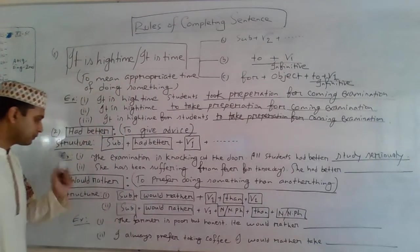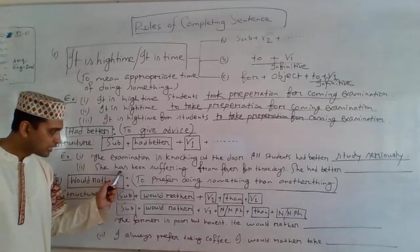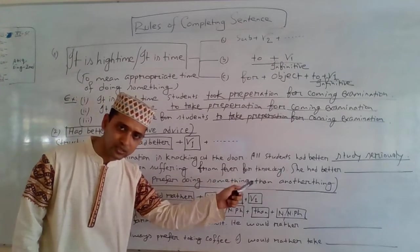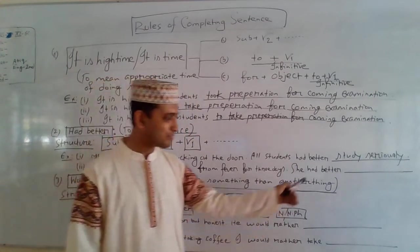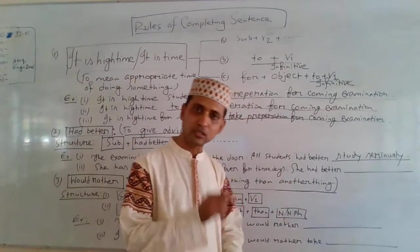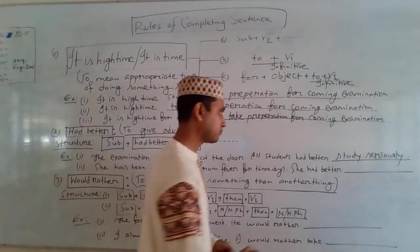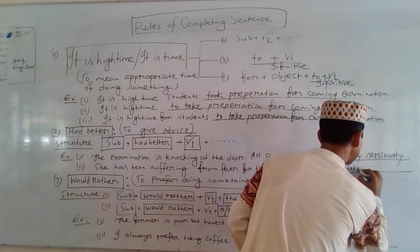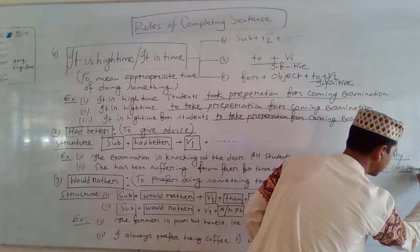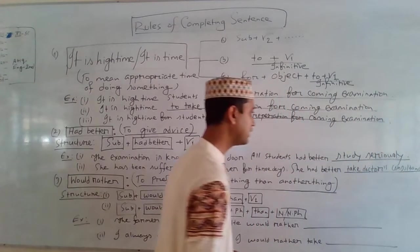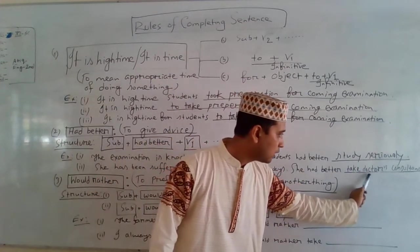Another example: 'She has been suffering from fever for 3 days.' This is also a complete sentence. Next: 'She had better take doctor's consultancy.' Here we have the subject 'she' and 'had better,' and after that, according to the rule, we use V1. 'She had better take doctor's consultancy.' After 'had better,' 'take' is V1 and has been used here.